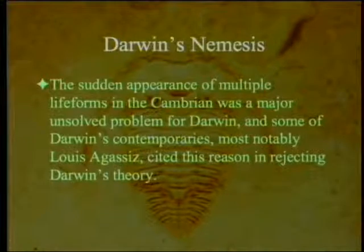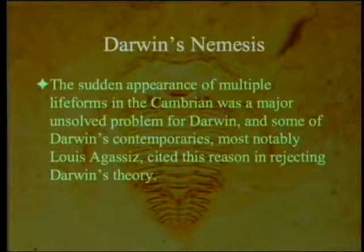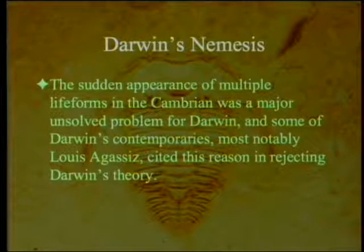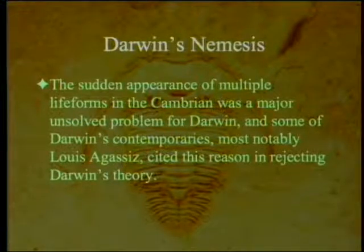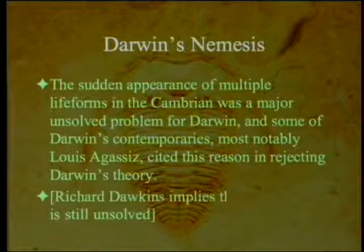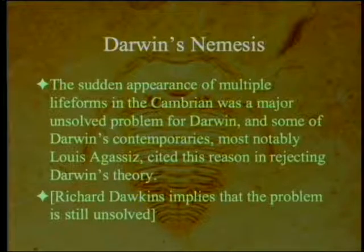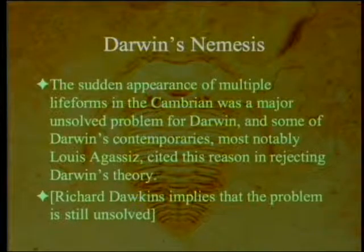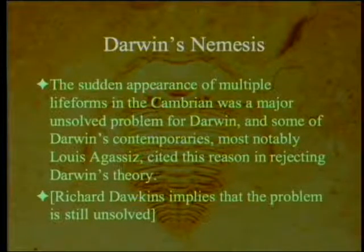Chapter one, as a one-slide summary: the sudden appearance of multiple life forms in the Cambrian was a major unsolved problem for Darwin. Some of Darwin's contemporaries, most notably Louis Agassiz, cited this reason in rejecting Darwin's theory. As a side note, Richard Dawkins implied that the problem is still unsolved, although he's quite sure there has to be a solution — because after all, evolution is true, and that means there has to be a solution.